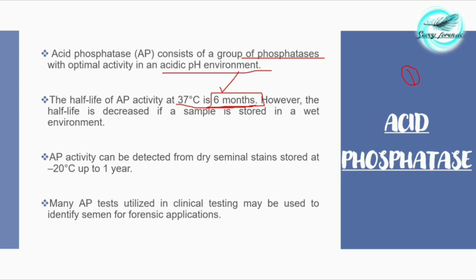However, the half-life is decreased if the sample is stored in a wet environment, because the sample gets degraded due to the growth of bacteria and other microorganisms, rendering the biological fluid unfit for preliminary examination. Acid phosphatase activity can be detected from dry seminal stains stored at -20 degrees Celsius for up to a year.